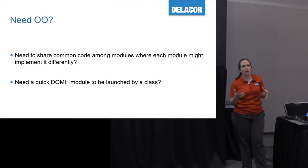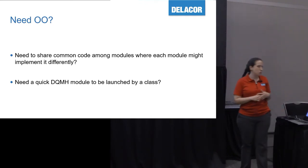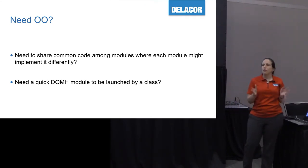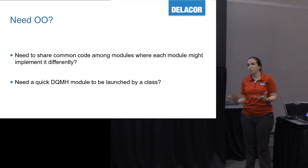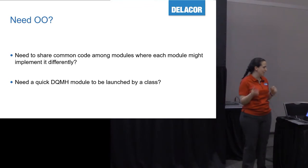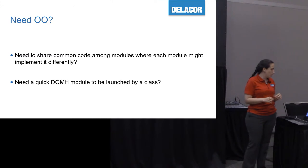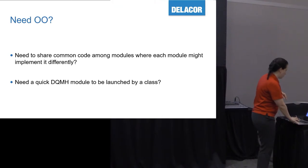Another misconception: 'Fabiola, this DQMH thing sounds great but it's for beginners. I do object-oriented programming and your DQMH does not let me do OO.' No — the idea with DQMH was to make it accessible to different levels of proficiency, but people comfortable with OO can still marry the two. If you need to share common code among modules where each module might implement it differently, or you need a DQMH module launched by a class — why would you need that? Tip five: you can add DQMH classes to a DQMH module.